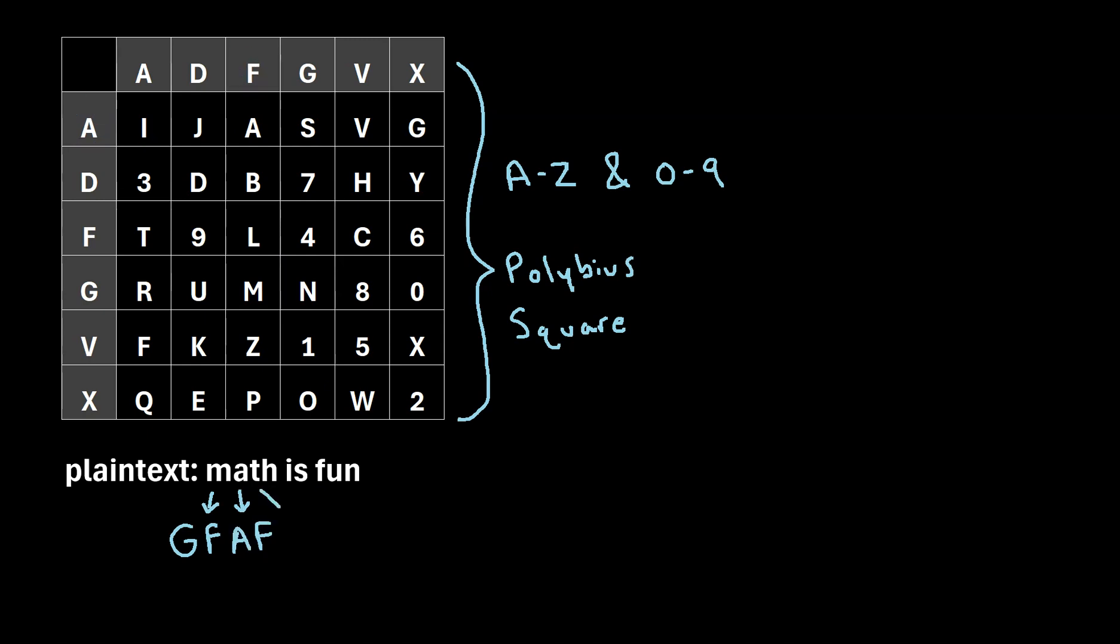And next, we'll move on to T. So we'll find T within this square. Here's T. The row header that corresponds to T is F and the column header is A. So we'll write F, A. And we're just going to repeat this process for every single letter in the plaintext.